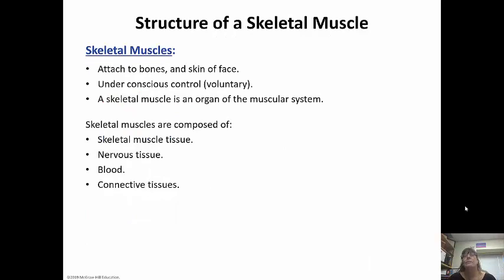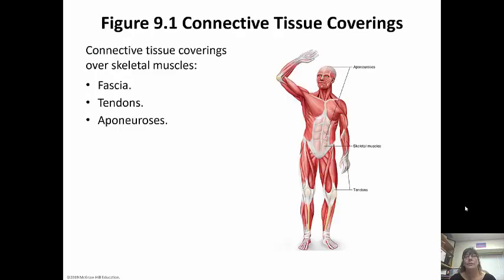Skeletal muscle attaches to the bones and the skin of the face. Again, it's voluntary. A skeletal muscle is actually an organ of the muscular system. Skeletal muscles are composed of more than just skeletal muscle tissue — they also have nervous tissue, blood, and connective tissues.